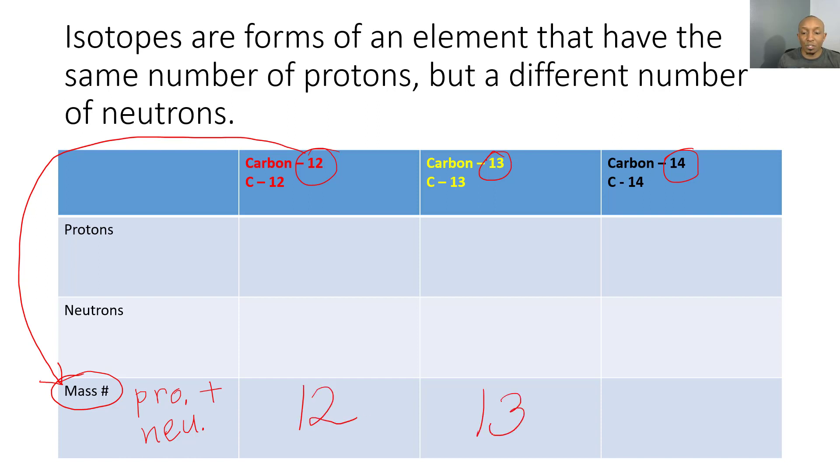If you look on your periodic table, you'll locate carbon, and above the element symbol you'll see a number. That number represents the atomic number, or the number of protons, which will be 6 for carbon. Notice that all three of these are the same.